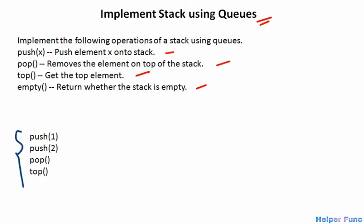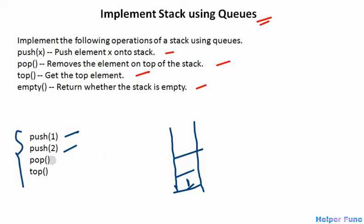Let's say we are given these set of instructions. We have to make a stack. First we will push one, then we will push two. Now for the pop operation, as per a stack, the top element should be deleted — so we will delete two from this stack. And now for the top operation, the top element of the stack is one, so we will return one. Let's see how we will solve this using queues.